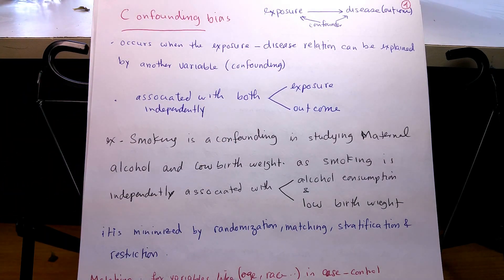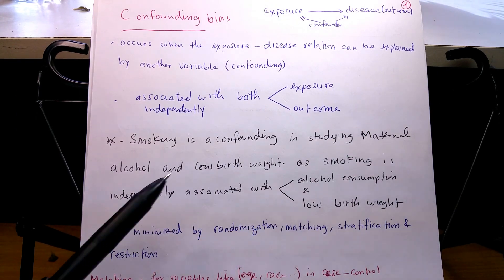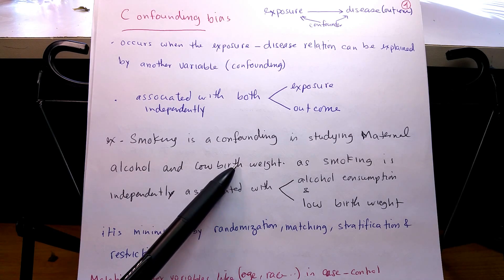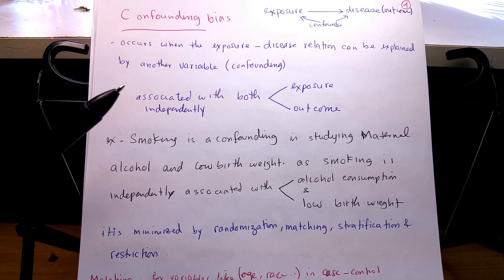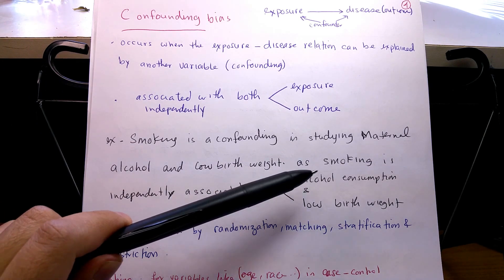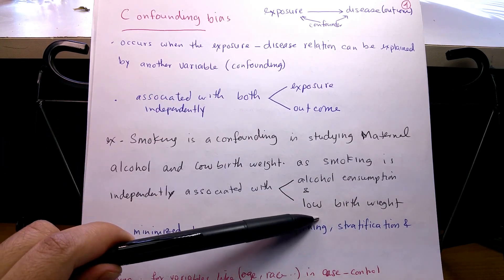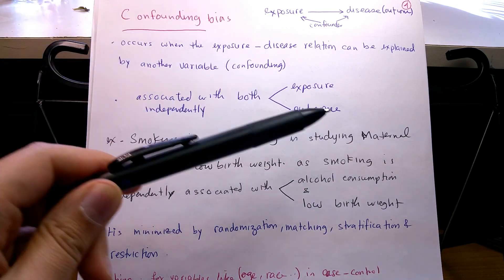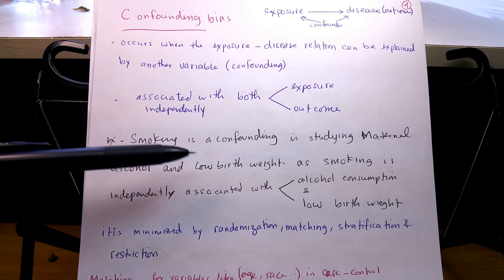Let's look at an example. When studying the effect of maternal alcohol consumption on low birth weight, they found that smoking is a confounder. Why? Because smoking by itself is associated with more alcohol consumption — smokers consume more alcohol — and smoking by itself can cause low birth weight. So we cannot conclude that maternal alcohol is the cause of low birth weight.